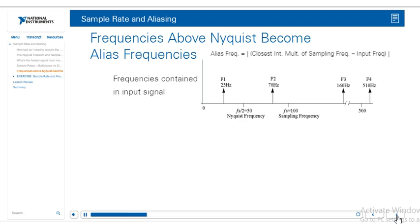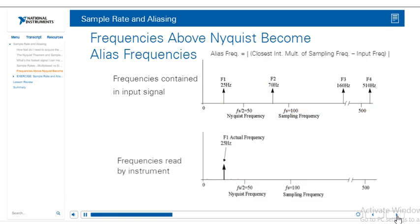Assume we have a signal with frequency components of 25 Hz, 70 Hz, 160 Hz, and 510 Hz. Our sample rate is 100 Hz. Therefore, our Nyquist frequency is 50 Hz, and any frequencies above 50 Hz will appear as an alias. So, in our example, we will correctly measure the 25 Hz frequency component.